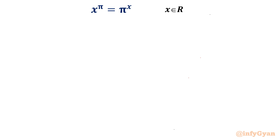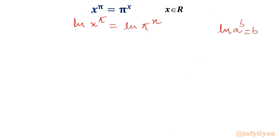I will consider x = π as one solution. Taking ln both sides and applying the ln property — where the exponent comes down — the equation becomes π·ln x = x·ln π.